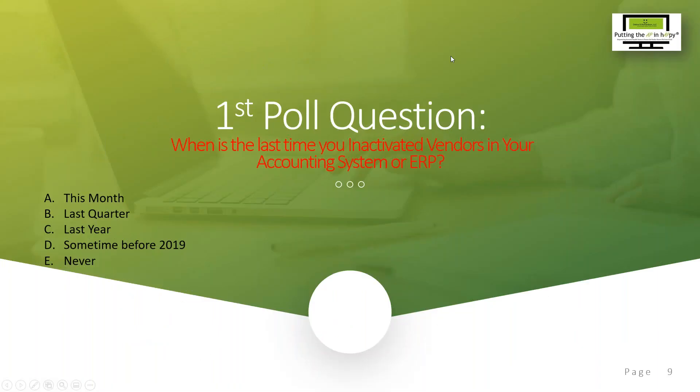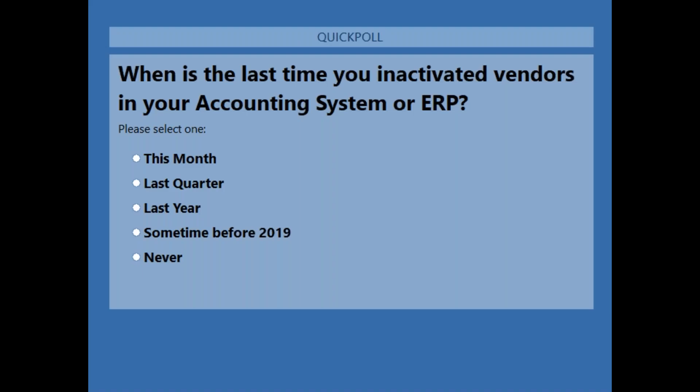I'm going to launch the first poll question: When is the last time you inactivated your vendors in your accounting system or ERP? The options are this month, last quarter, last year, sometime before 2019, or never. We know how that goes, especially if you don't have a big vendor master file — there may have been legacy folks who didn't think it needed to be cleaned up.